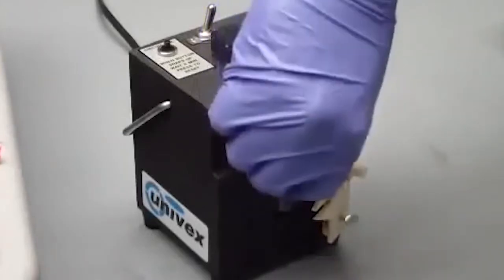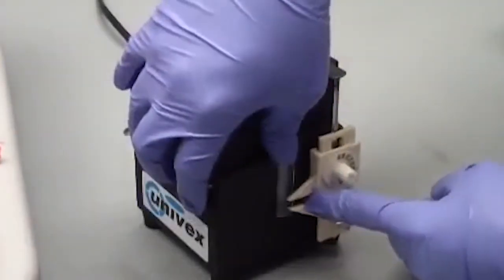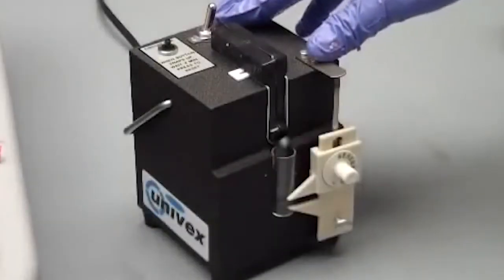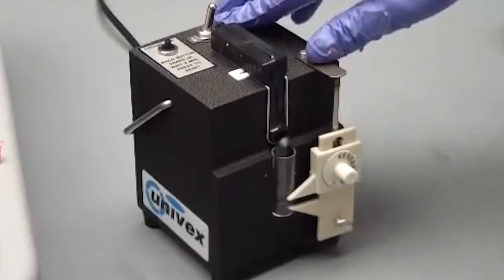When you place the vial in the machine, make sure you use the dial to keep pressure on it. We're now ready to turn the machine on. We're going to let it drop until no more liquid comes out of the cartridge.